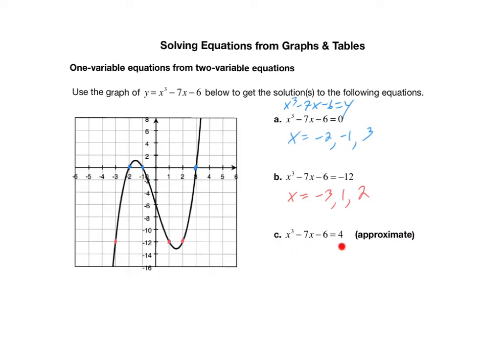For this final equation, we want to approximate the solution. In this case, they're giving us a particular y value of 4. So we want to find the points on the curve that have a y value of 4 — let's do this in yellow. Tracing along the curve, there is only one point that has a y value of 4. So there's only one solution, and the corresponding x value is a little bit past 3, but not nearly as close to 4. So this is somewhere around 3.1 — x is approximately 3.1. Again, no computations were needed.